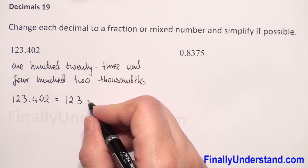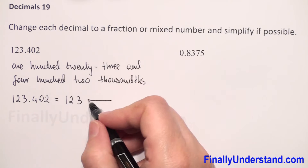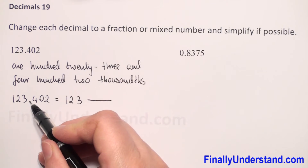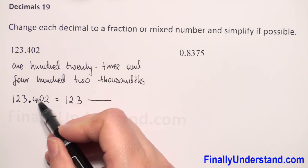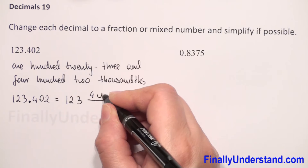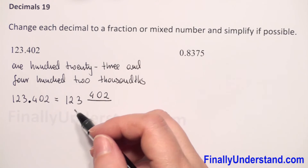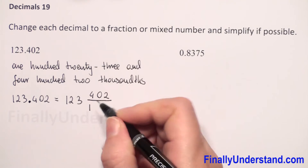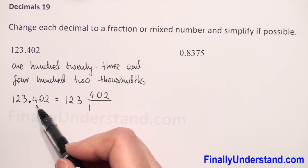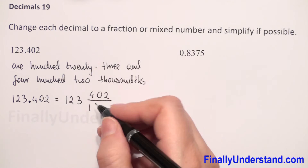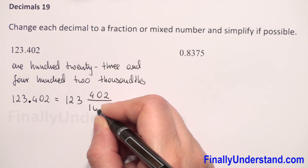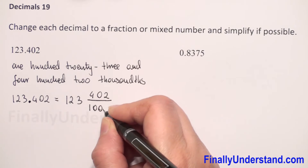Next we write the fraction bar, and whatever we have after the decimal point we write in our numerator — so we have 402. In the denominator we always write 1, and now we count how many digits we have after the decimal point: one, two, three digits. So we add three zeros to our denominator, giving us 1000.